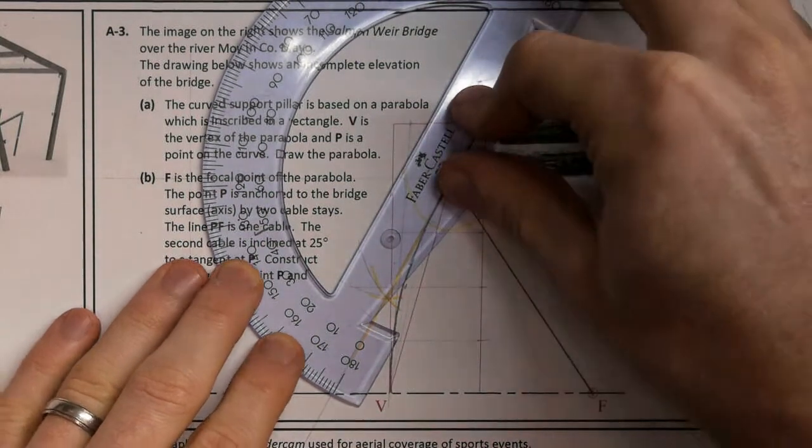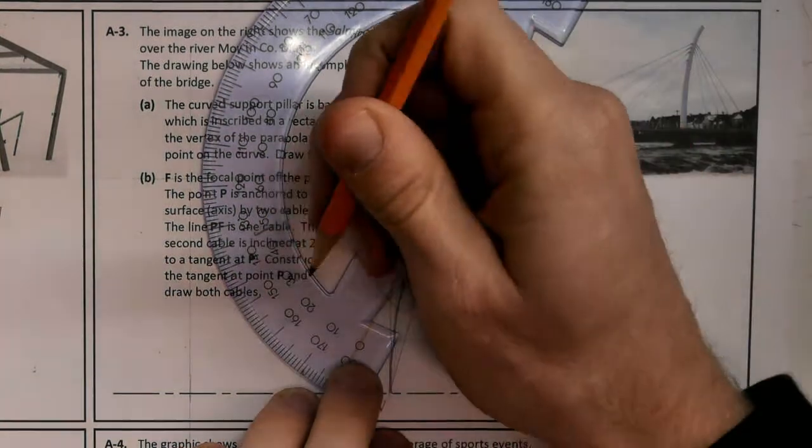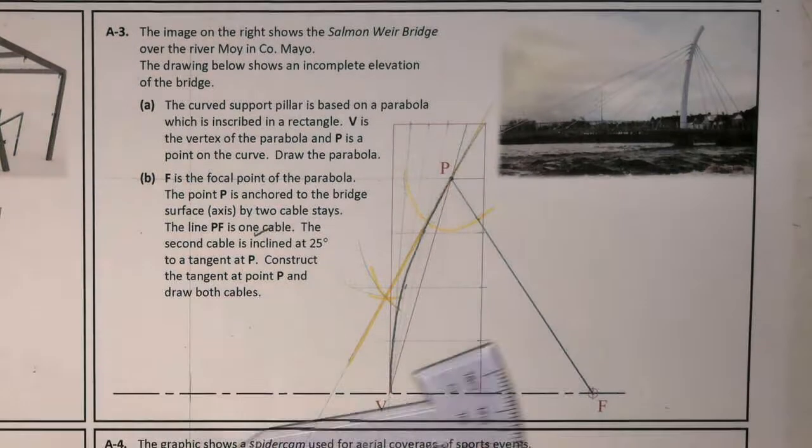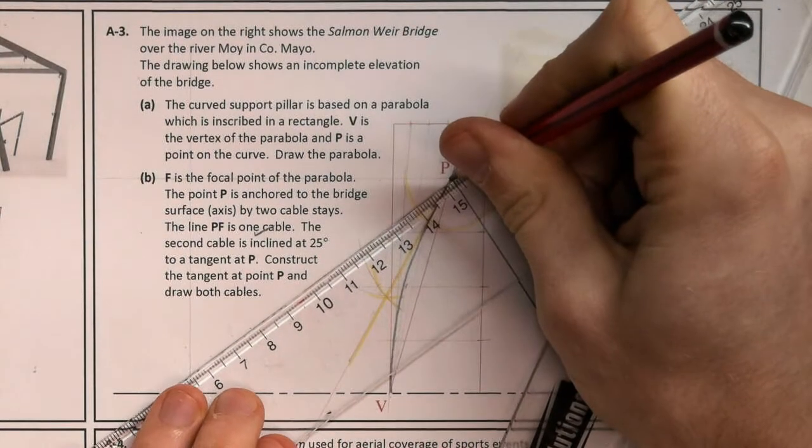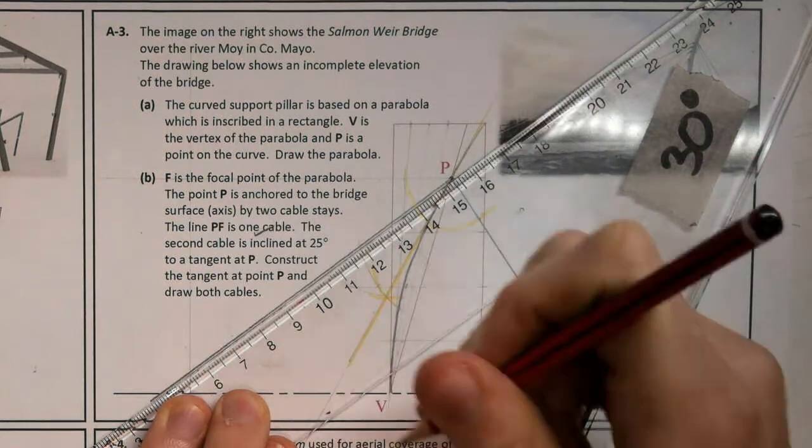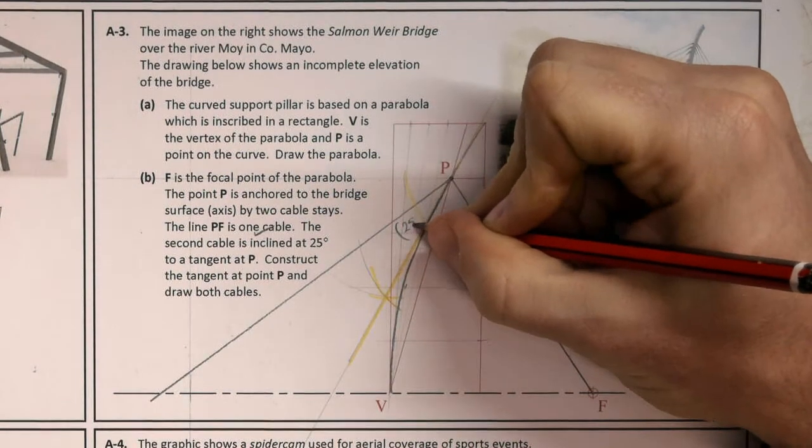Line up my P and my zero degrees, and it's 25 degrees there. So now I can draw at P back. And that is an angle of 25 degrees.